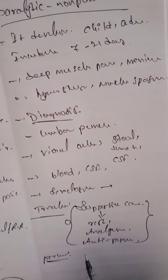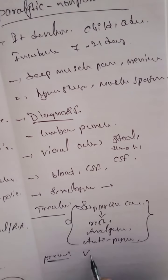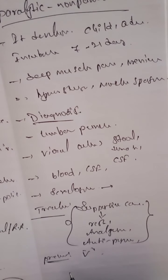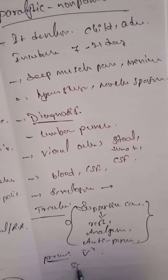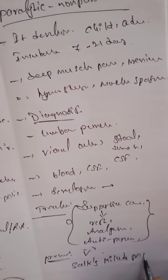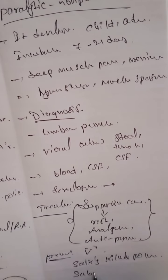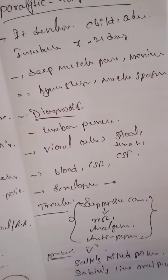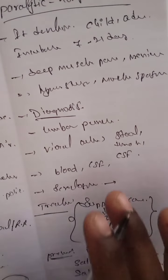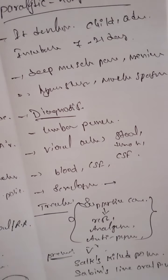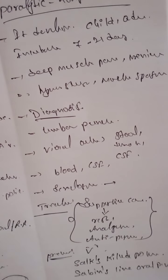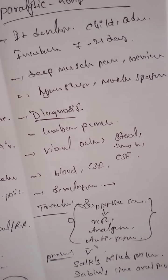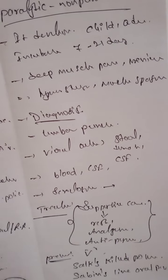For prevention, immunization vaccines are used in infants and children. There are two types: the Salk killed polio virus vaccine, and the Sabin live oral polio virus vaccine. These are administered via the appropriate route and kill the particular RNA virus. This concludes the discussion on treatment, prevention, diagnosis, and the introduction to poliomyelitis.